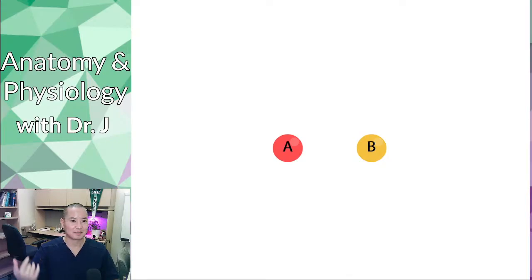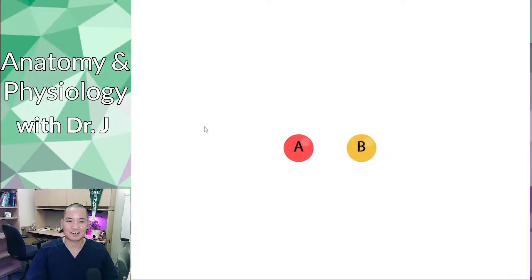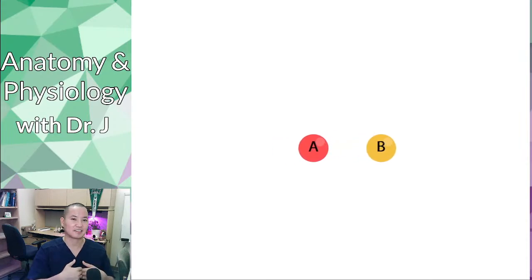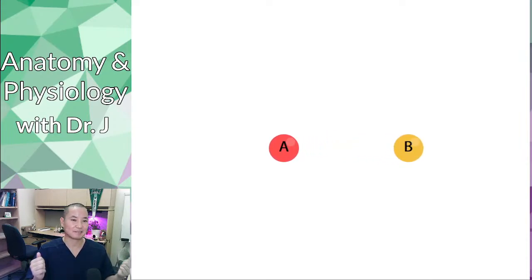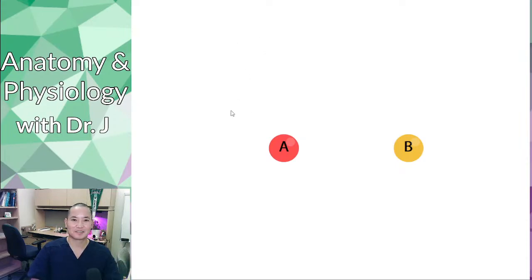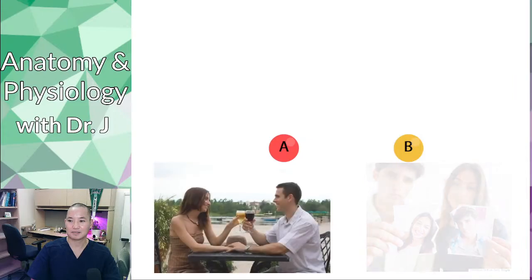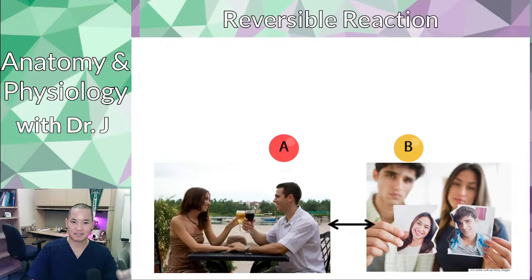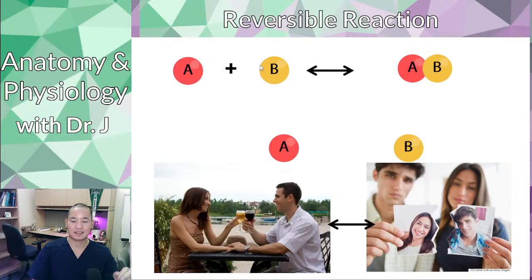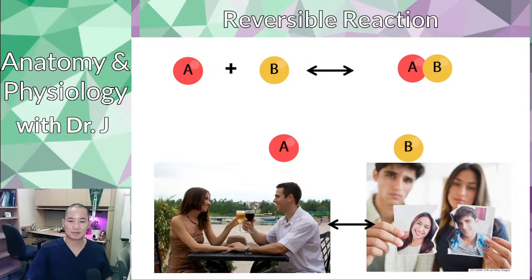For reversible reactions, using the relationship analogy: you might know somebody who's been in a relationship where they start out together, break up, get together, break up, get together repeatedly. Sometimes they're more often broken up, sometimes more often together. These sort of back-and-forth reactions — forming new bonds and breaking them — is what we call a reversible reaction. It can go both ways: synthesis or decomposition. That's why in chemical notation these reactions are shown with a double arrow, because it can go either way.